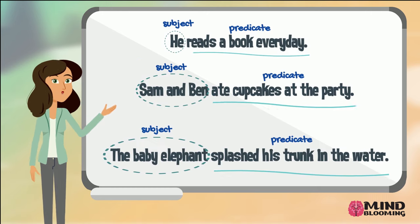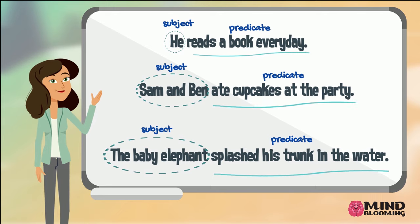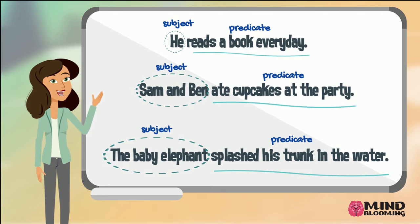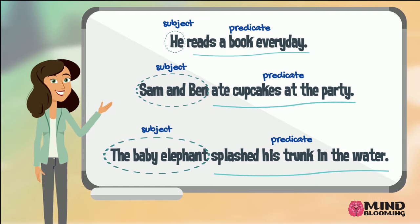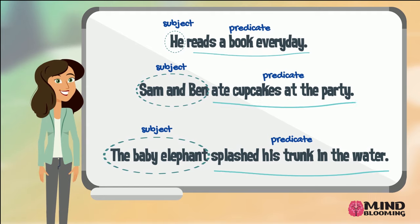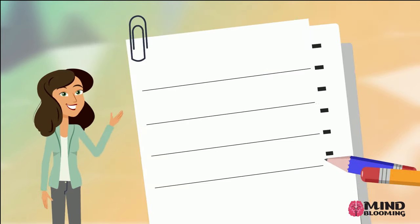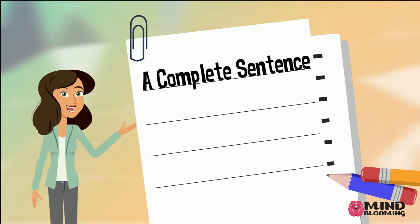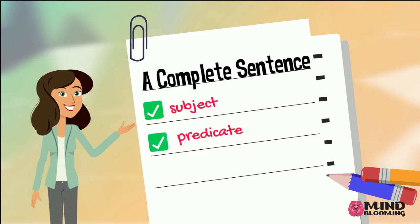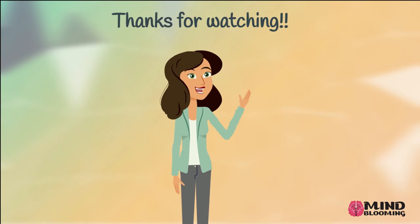Notice how in all of the sentences, the subject could be either a noun, a pronoun, or a proper noun. And that every predicate started with a verb. Now you know that a complete sentence has to have a subject and a predicate. Thanks for watching.